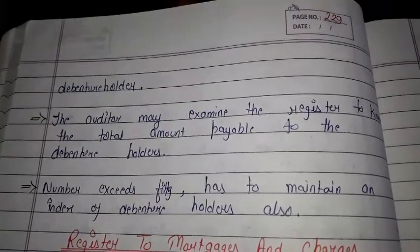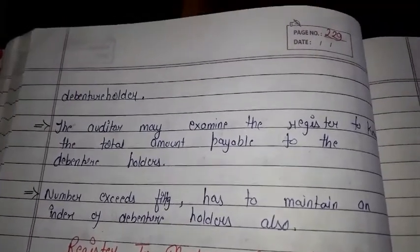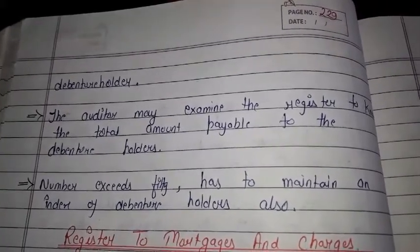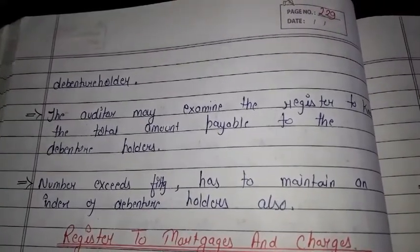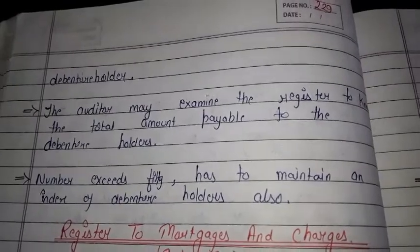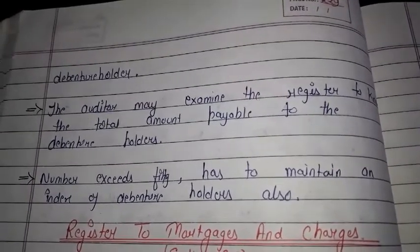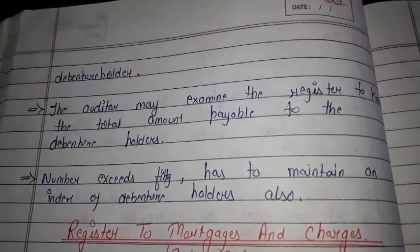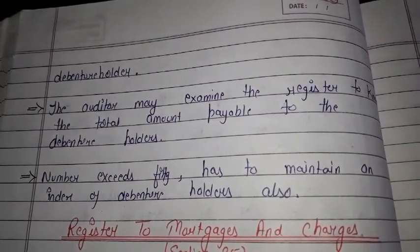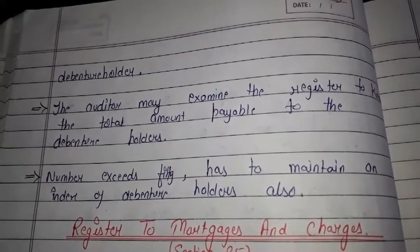To know the total amount payable to the debenture holder, the auditor may examine the register to see how much money debenture holders are paid. If the number of debenture holders exceeds 50, the company has to maintain an index of debenture holders.